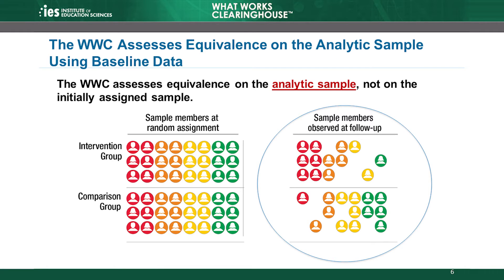One key point to remember is the WWC assesses baseline equivalence on the analytic sample using baseline data. The analytic sample includes the units that the study used to assess the impacts. In the example depicted here, the colors represent characteristics of sample members in both groups at baseline. The WWC uses baseline data to determine whether the groups were similar on certain characteristics before the intervention occurred. This study randomly assigned the sample members, but attrition is high.